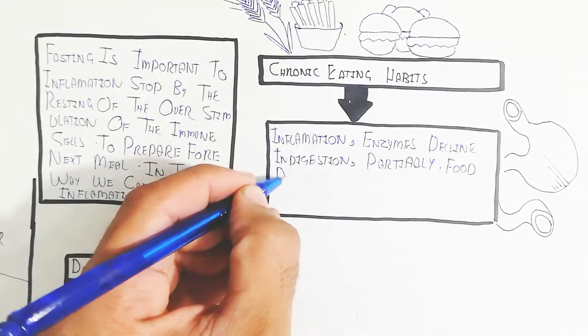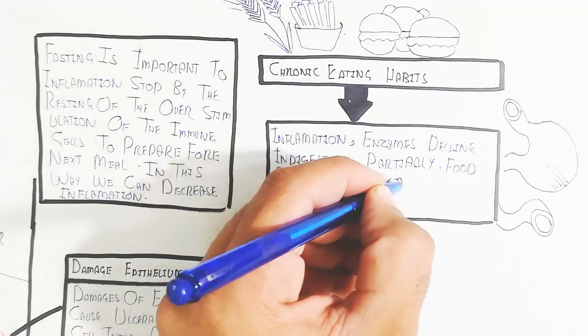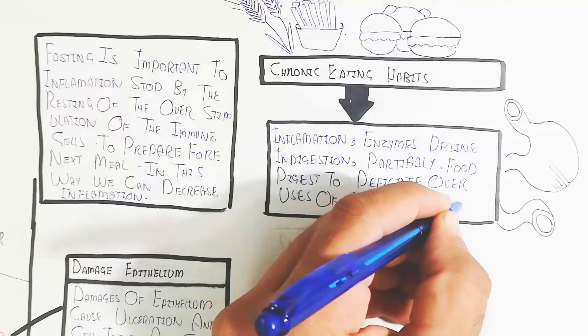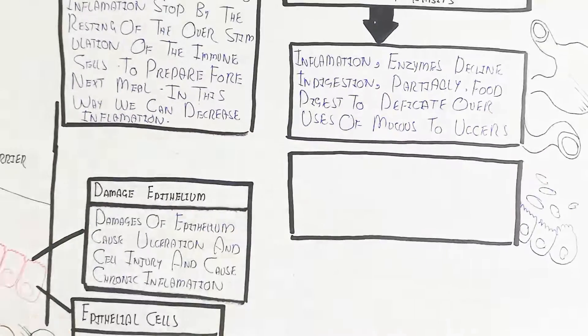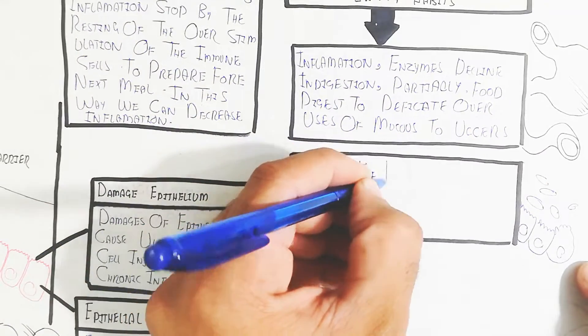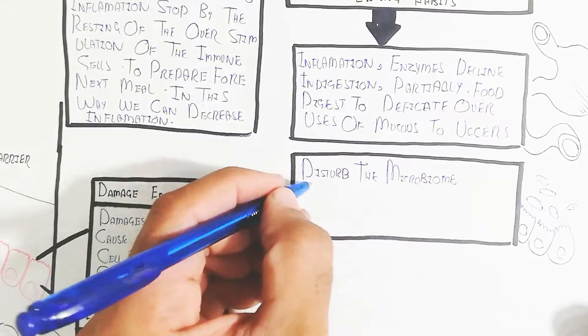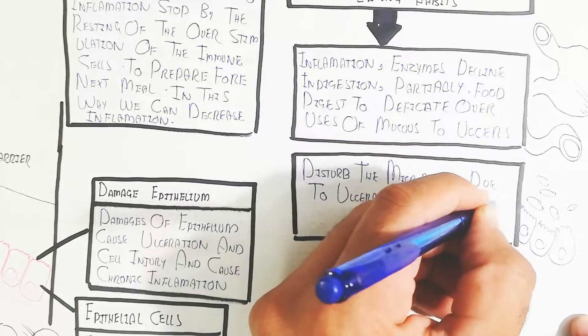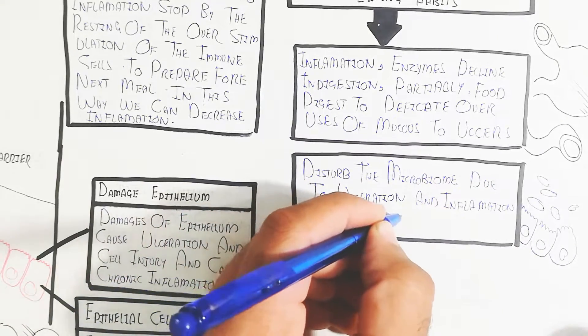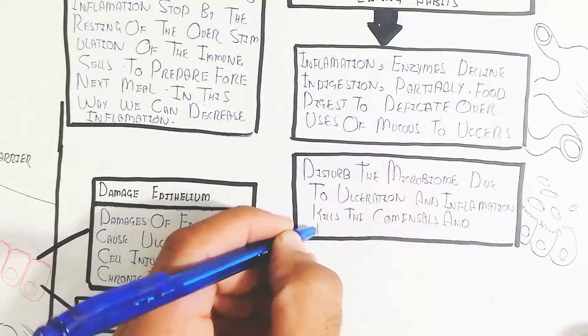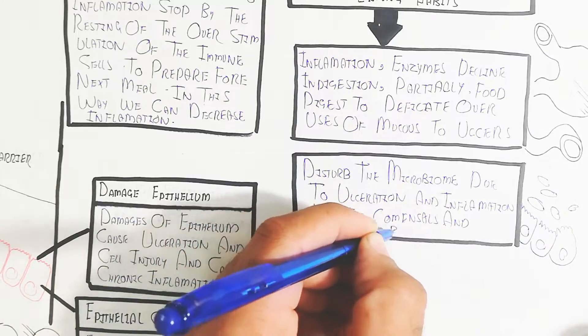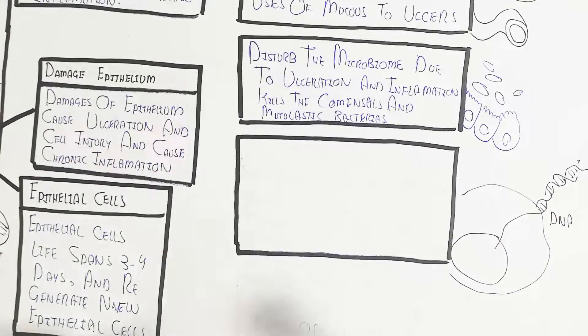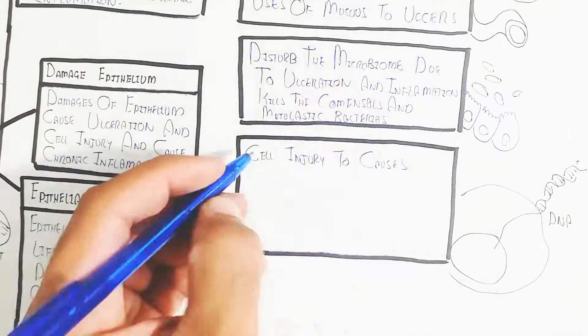Chronic eating habits lead to inflammation, enzyme decline in digestion, partially digested food to defecate, and use of mucus leads to ulcers. On the other hand, it disturbs the microbiome due to ulceration and inflammation, killing common cells and mutualistic bacteria which provide short chain fatty acids, ketones, and vitamin K.